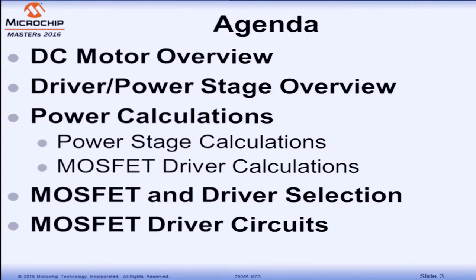We're going to break this up into a few different parts. The first part is an overview of simple DC motors and simple brushless permanent magnet DC motors. We'll talk about the different power stages for driving each one, then do calculations for each element in the drive stage — how to calculate currents and power dissipation — then go into selecting the driver for the MOSFETs, and finally some circuits and tricks to get these motor drivers to operate reliably.